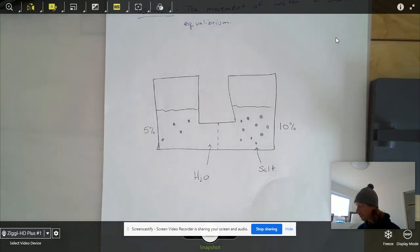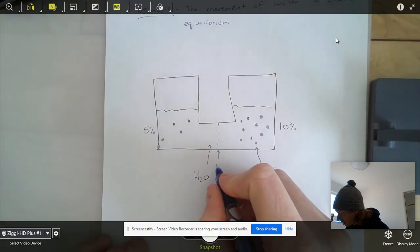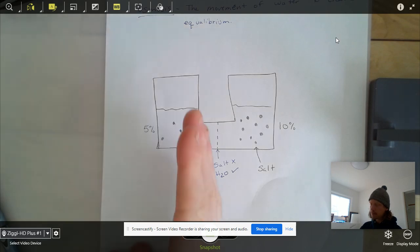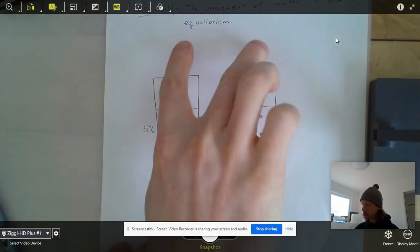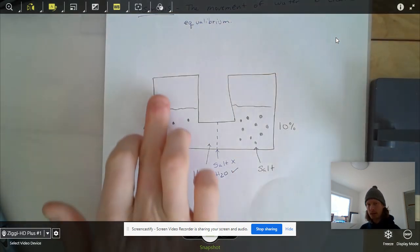So this membrane does not let salt through, but does let water through. Imagine that we have this membrane in our little tube here. We still have these two openings. We put salt in this side, put a lot of salt on the right side, a little bit of salt on the left side.